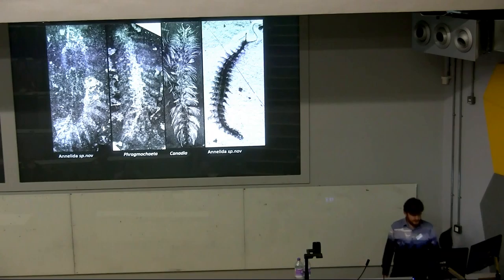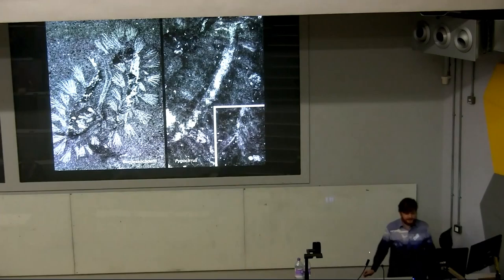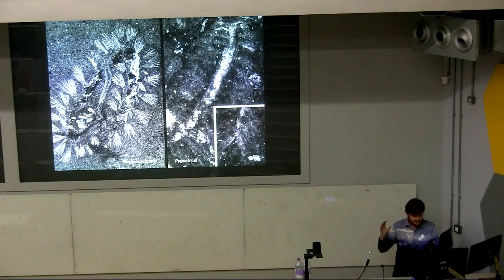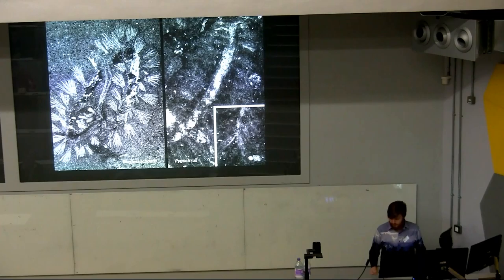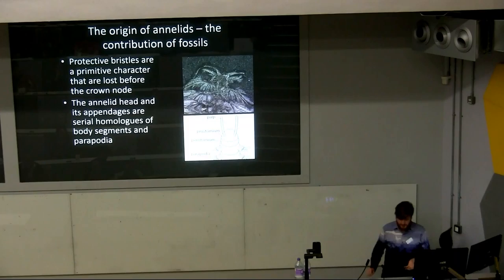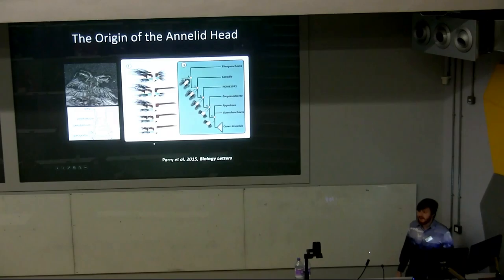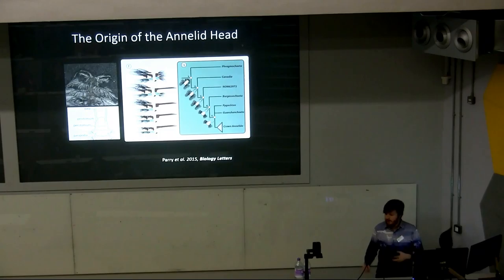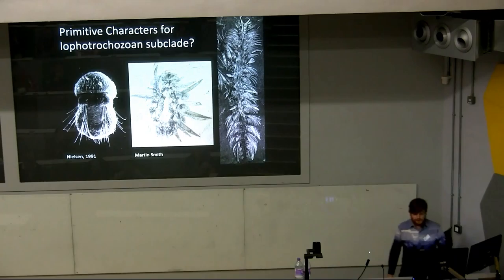We find a grade of forms with dorsal protective chaetae — including a new taxon, Phragmochaeta, Canadia, and a new form from Marble Canyon — recovered as the most primitive members of the annelid stem group. Forms with laterally projected parapodia are more deeply nested, suggesting that protective bristles are an annelid plesiomorphy lost prior to the origin of the annelid crown group. We also see unusual head morphology in these animals, suggesting the annelid head has a segmental origin, and that paired head appendages defining the crown group are derived from modified parapodia that lost their bristles and became elaborated.